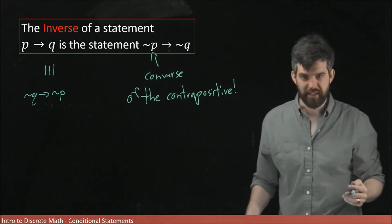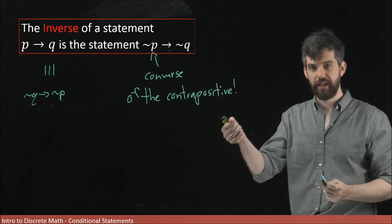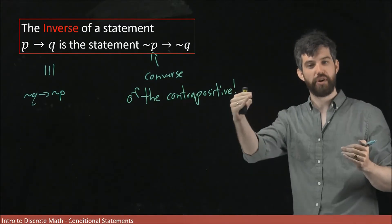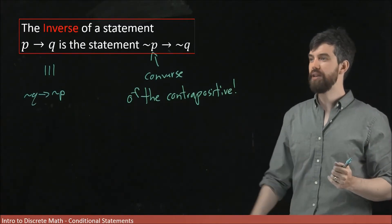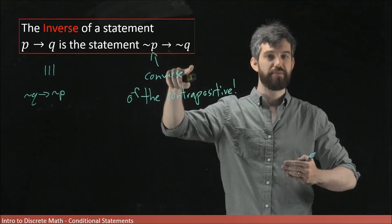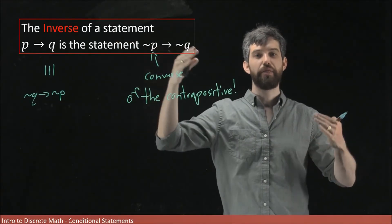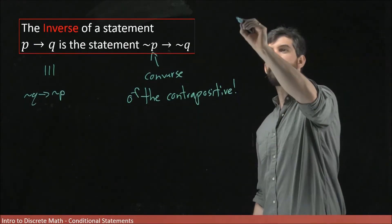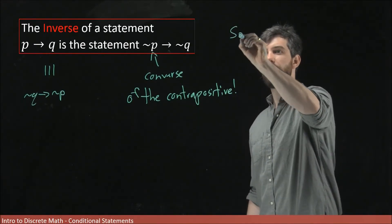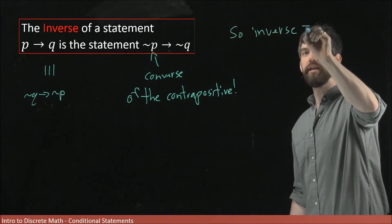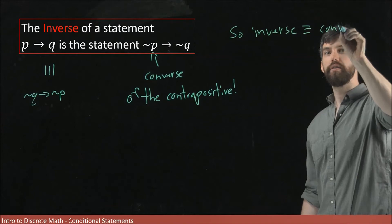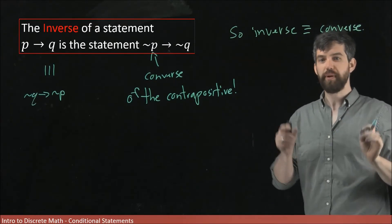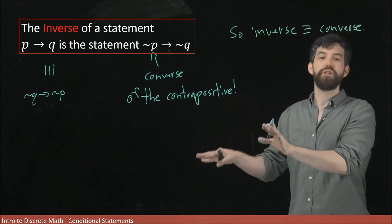Since the contrapositive does not change the logic — a statement and its contrapositive are logically equivalent — the converse and the converse of the contrapositive (which is the inverse) are also logically equivalent to each other. Our conclusion is therefore that the inverse is logically equivalent to the converse, but importantly, not logically equivalent to the original statement.